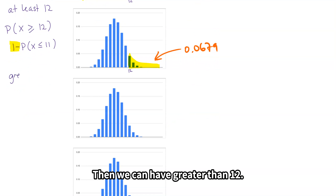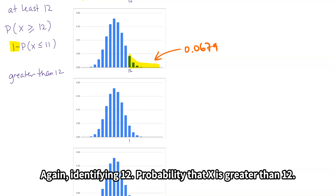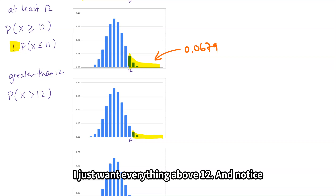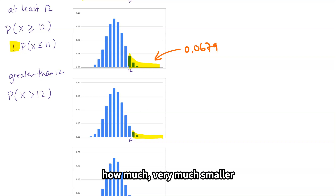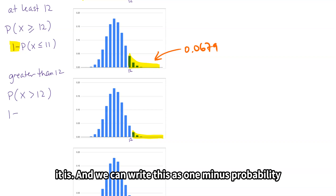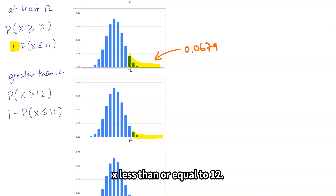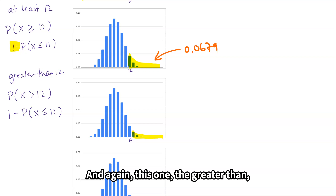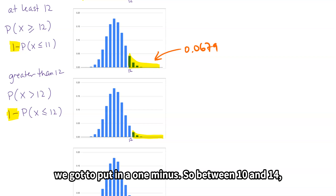And then we can have greater than 12. Again, identifying 12 — the probability that x is greater than 12. This time I don't want to catch the 12; I just want everything above 12. Notice how much smaller it is. We can write this as 1 minus P(x ≤ 12), subtracting off 12 and everything below.